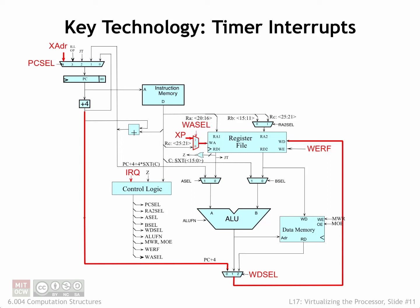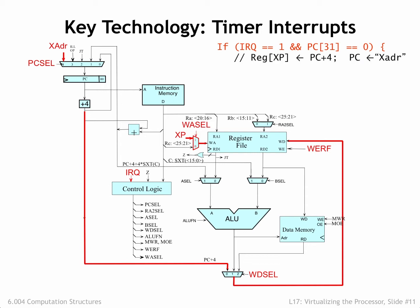A key technology for timesharing is the periodic interrupt from the external timer device. External devices request an interrupt by asserting the beta's interrupt request input. If the beta is running in user mode, asserting IRQ will trigger the following actions on the clock cycle the interrupt is recognized. The goal is to save the current PC+4 value in the XP register and force the program counter to a particular kernel mode instruction, which starts the execution of the interrupt handler code.